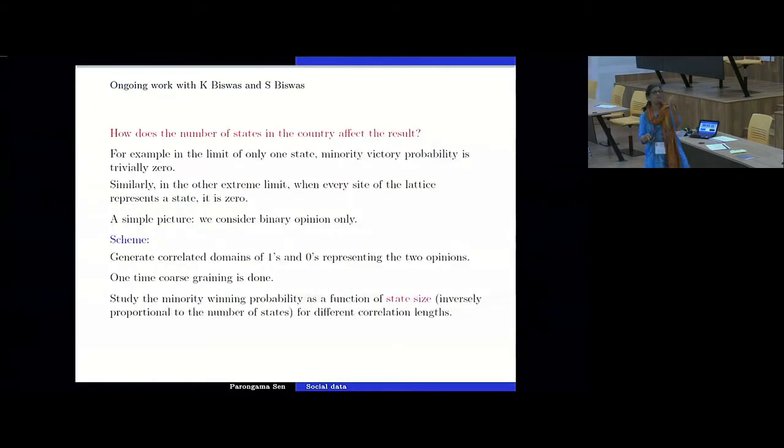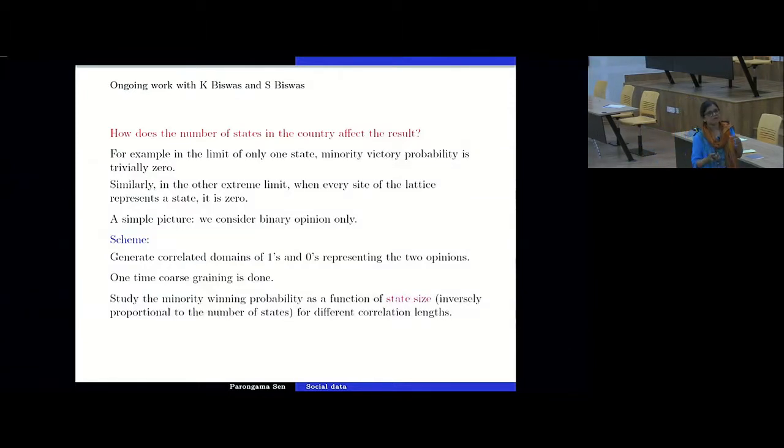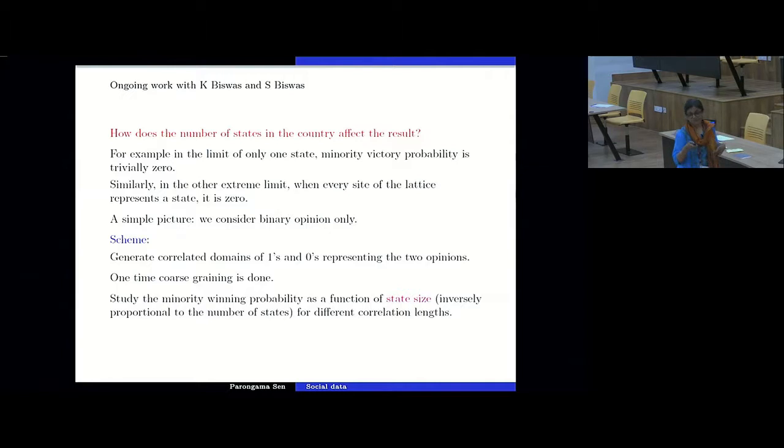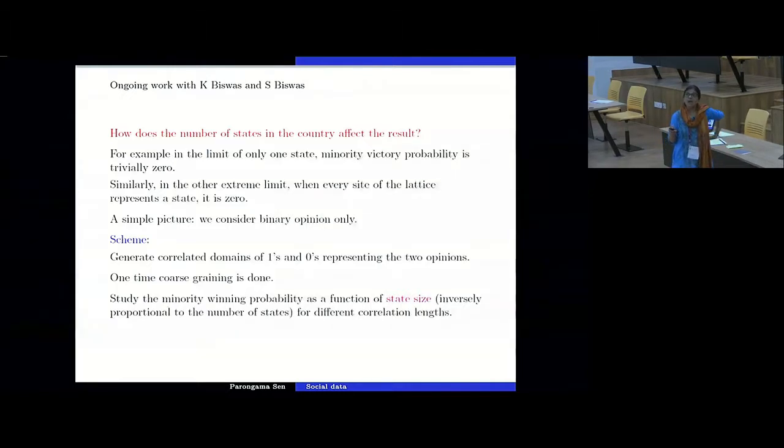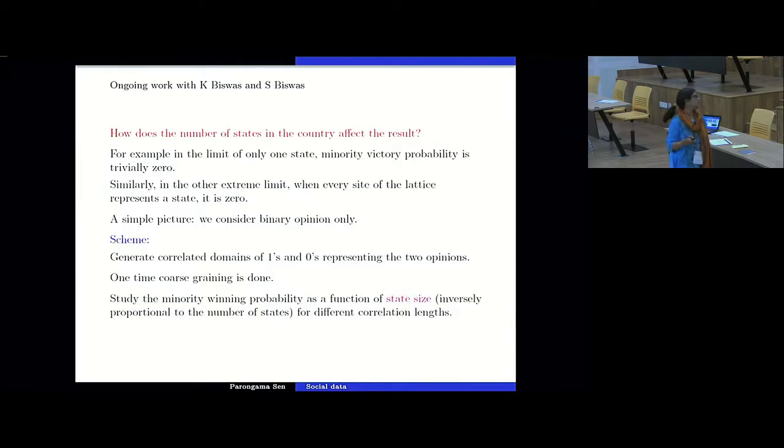It is a continuation of that US election also. That here we are interested in this probability when the number of states can be a variable. There are around 51 states in USA. So we wanted to see that if we reduce that number or increase that number, is this probability affected? And for this particular case, what we did, we did not consider a model, but we generated some correlated configurations. And this correlation length was a variable here. And so now we have just a two variable problem. So we have domains of ones and zeros representing the two opinions. And we do a one-time coarse graining. And then we studied this probability that the minor, the popular candidate loses. And this is done as a function of the state size. So it is inversely proportional to the number of states.